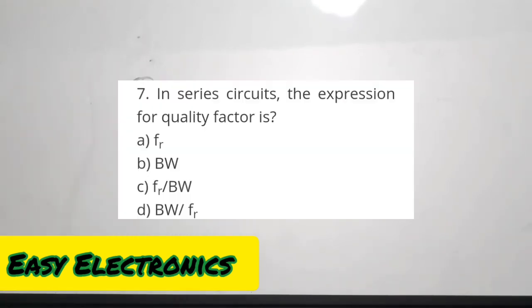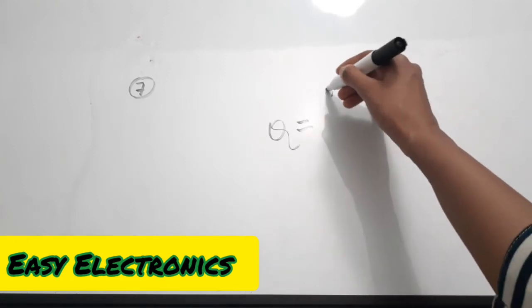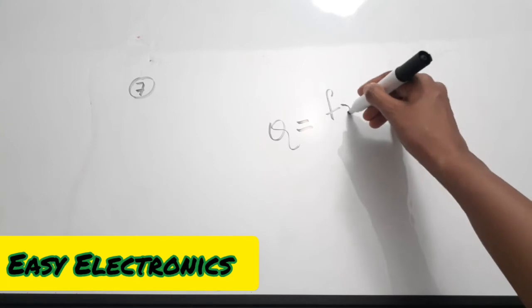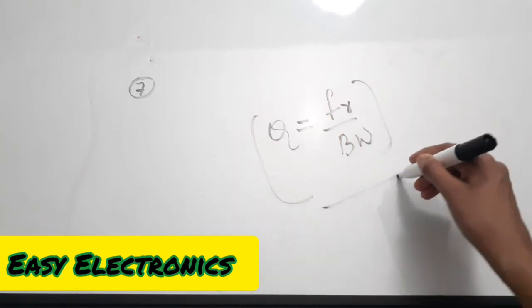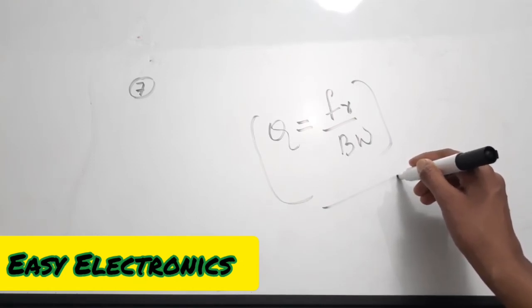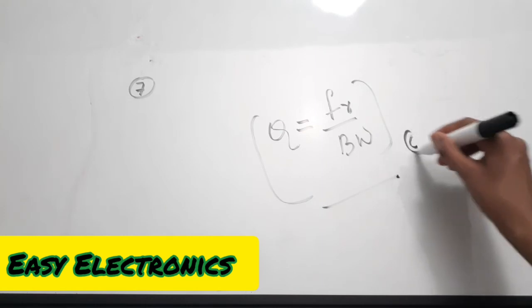Question seven is about the expression for quality factor in series circuits — a very important equation. The quality factor for series RLC circuits is given by Q equals resonant frequency divided by bandwidth. We have a separate video on series RLC circuit covering all important concepts in the analog electronics playlist. The correct answer here is option C.